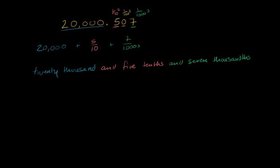So we could write this as, so once again we would have our 20,000. But instead of 5 tenths and 7 thousandths, let's write our 5 tenths in terms of thousandths. And the easiest way to do it is to multiply the numerator and the denominator both here by a hundred. So then we will have,